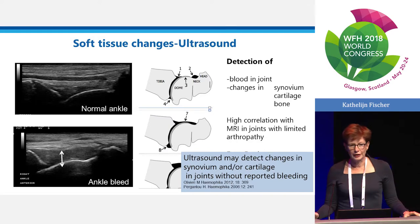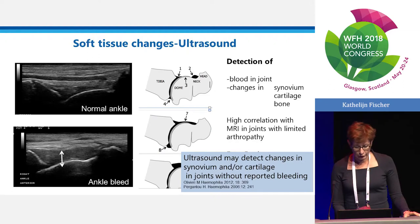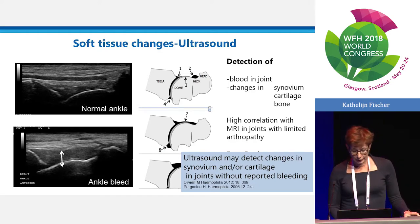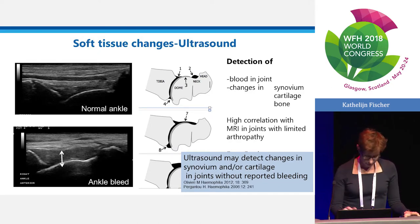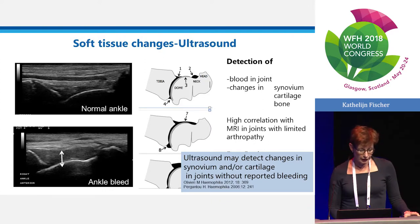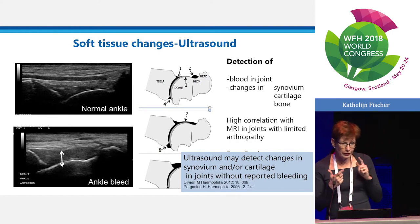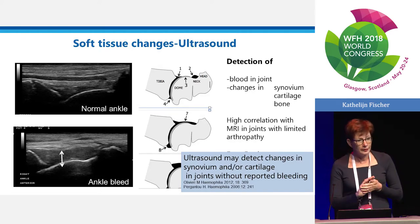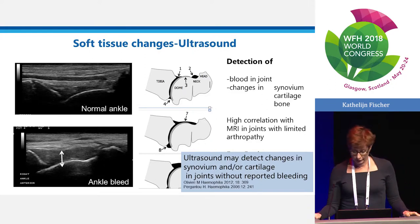For ultrasound: in the middle you see an ankle — tibia and talar dome. The top picture is normal. At the bottom you see black appearing — that is blood in the joint. You can see synovium, cartilage, and bone. You cannot see the whole joint, but it has really good correlation with MRI, and it is fast — you can do it in five minutes. Also importantly, ultrasound may detect changes in joints that were not reported to have bleeds.